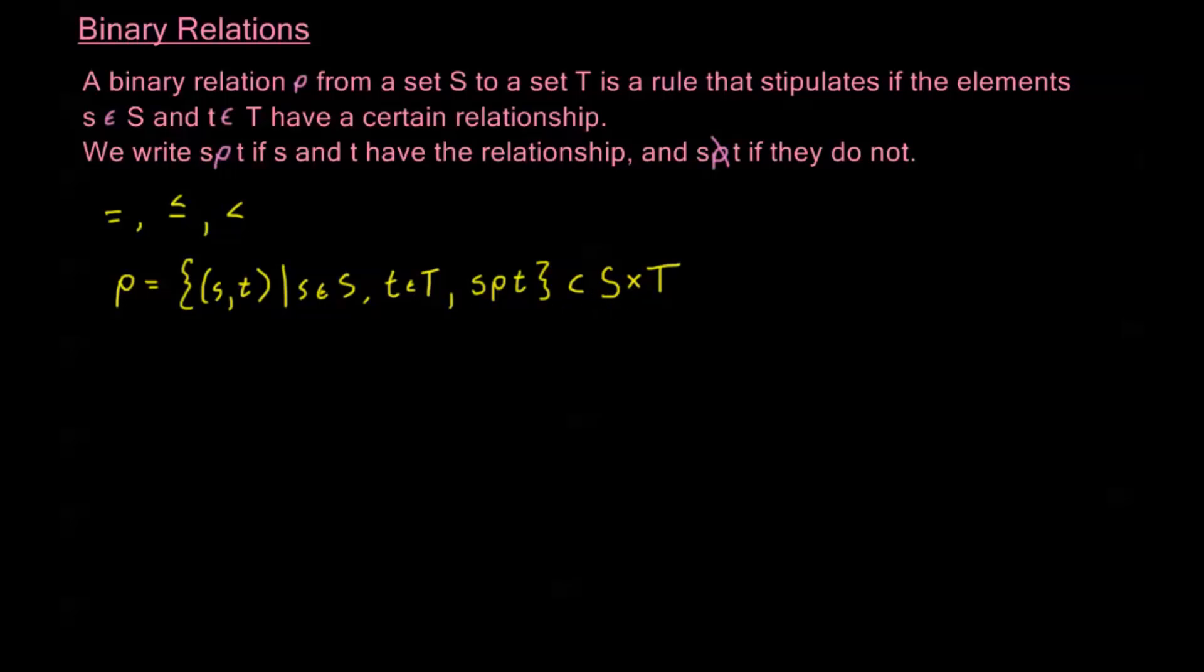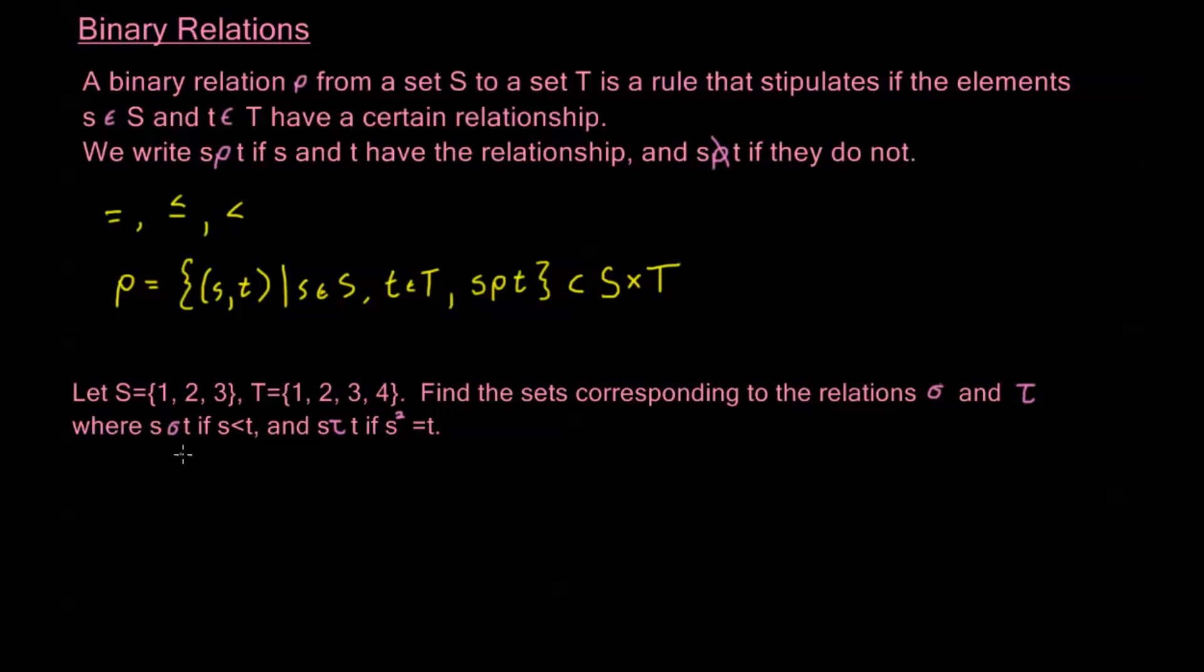Okay, so let's have an example, so we can kind of see what this means in application. Let's let S equal the set {1, 2, 3}, and T equal the set {1, 2, 3, 4}.